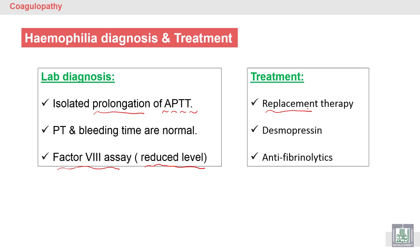There are many methods for replacement. Older methods used plasma, while newer methods use recombinant Factor 8 — an artificially manufactured Factor 8 given by injection. This is a better treatment with no infection risk and no complications, because plasma-based treatments carry risks of complications such as infection by hepatitis or HIV.